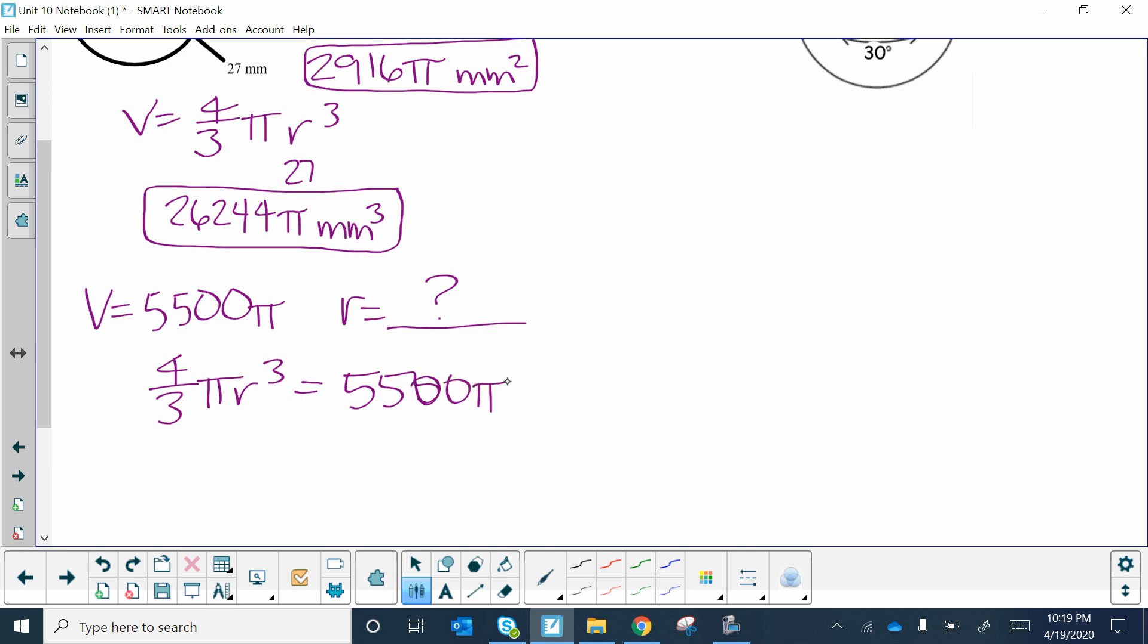Then solve for r using your algebraic steps. The first thing I would do is cancel the π, and then get rid of the 4/3. The way you get rid of that is multiply by 3/4. So then we have r³ equals 5,500 times 3/4, which is 4,125. Here's where some kids get confused.